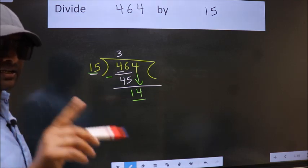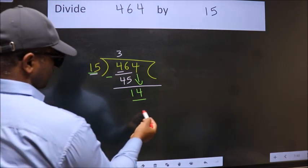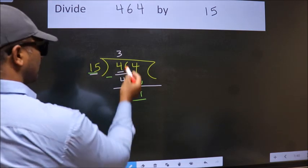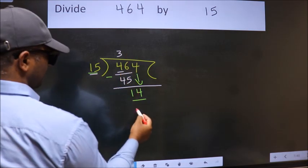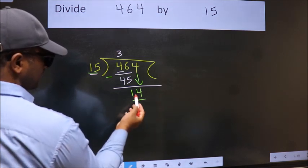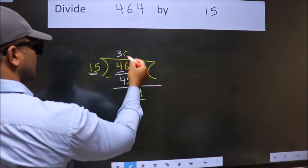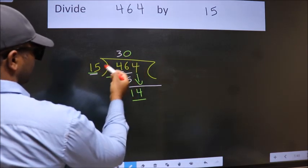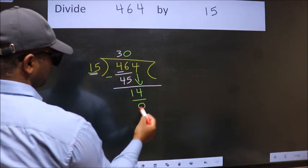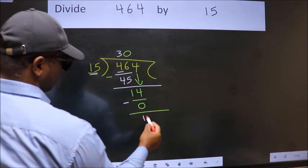Instead of that, what we should think of doing is which number should we take here. If I take 1, we get 15, but 15 is larger than 14. So what we do is we take 0 here. So 15 into 0 is 0. Now we subtract and get 14.